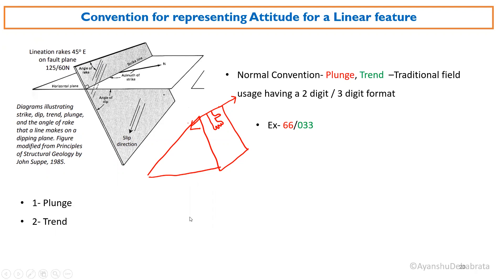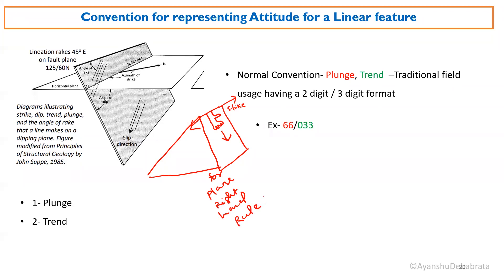Whichever direction the thumb points, that indicates the strike direction. You just have to put your right hand on the inclined plane such that the fingers point in the dip direction — this is the dip direction — and the thumb will be pointing towards the strike. This is for the right-hand rule for a plane.